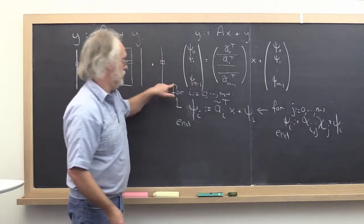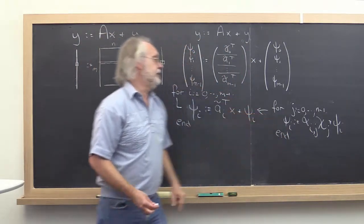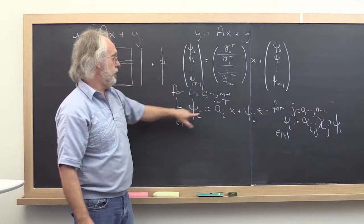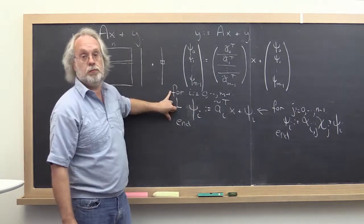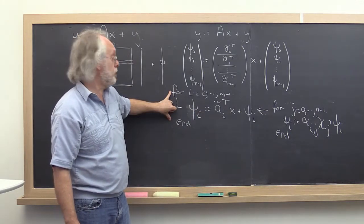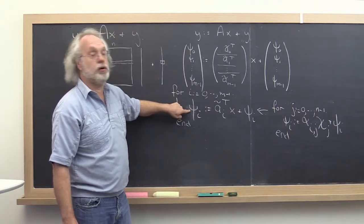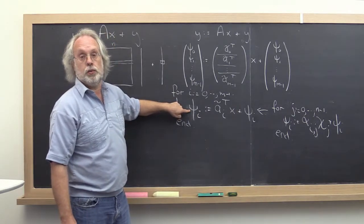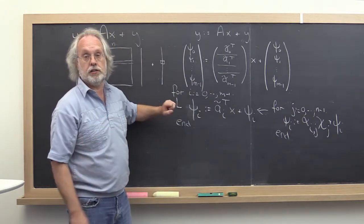update psi sub i with alpha i j times chi sub j added to psi sub i. So the double loop here implements a loop around the dot product. We're layering the matrix-vector multiplication on top of a dot product with a row of A and the vector x.